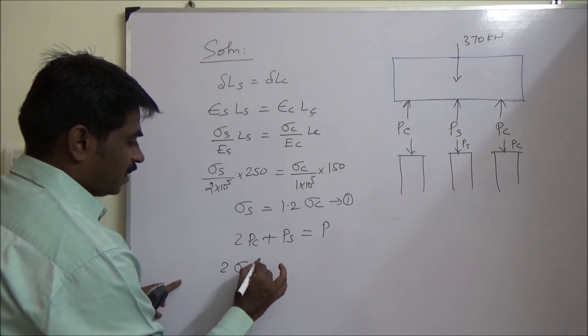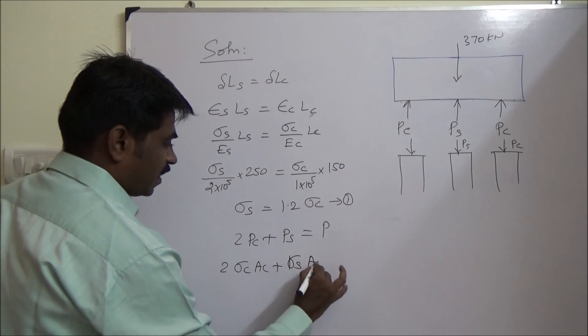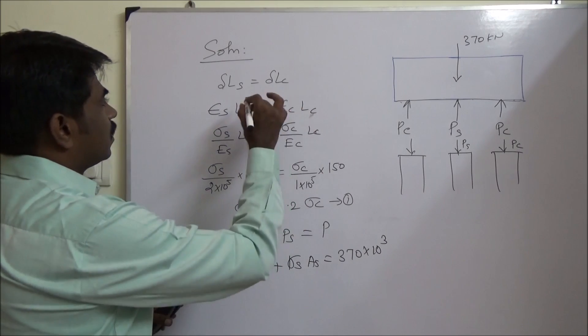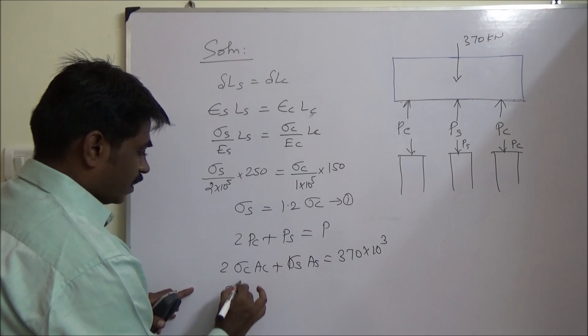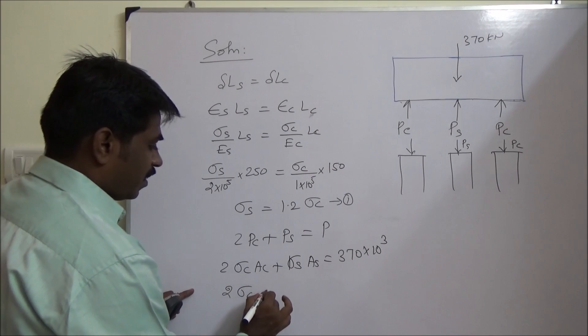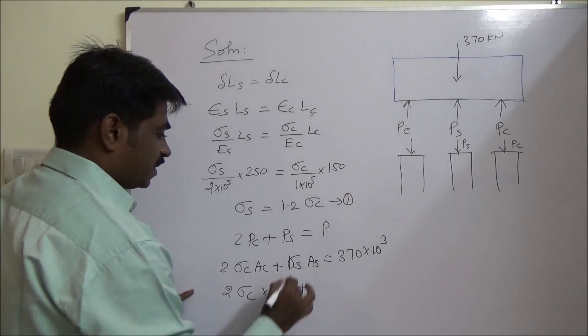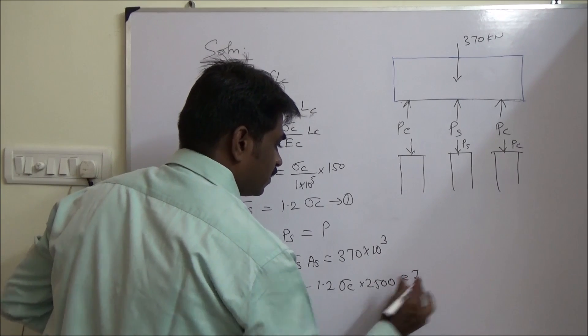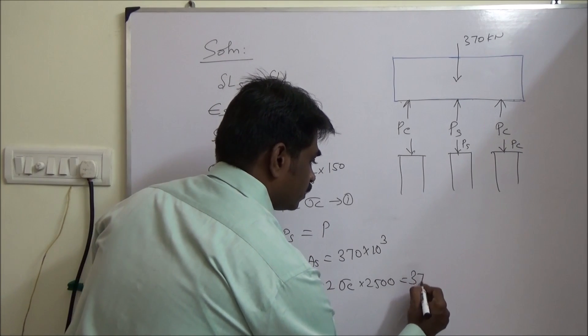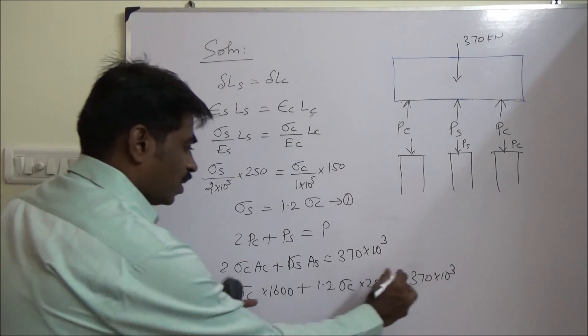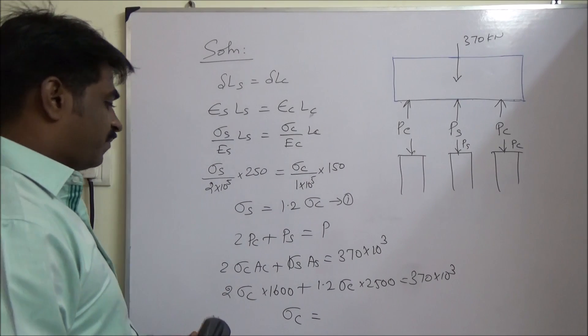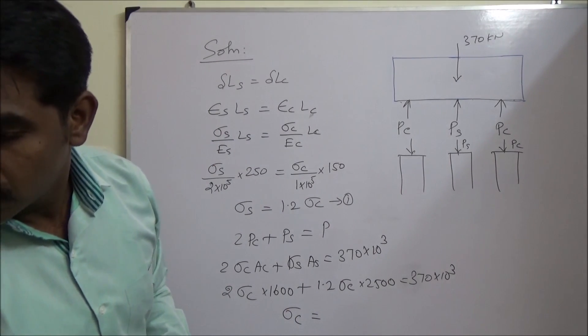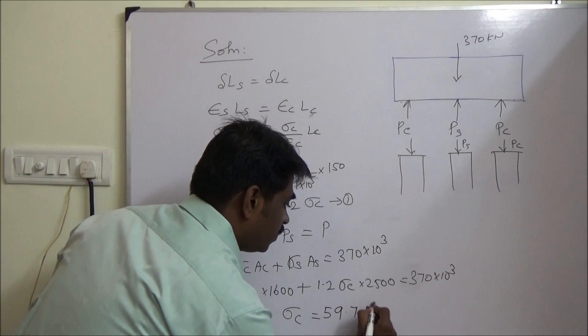So the load, 2 PC plus PS equal to the total force. This PC equals sigma C times AC plus sigma S times AS equals 370 into 10 to the power 3. So area, sigma C, we can keep this. Area is 1600, sigma S is 1.2 sigma C, AS is 2500.